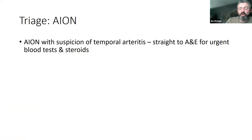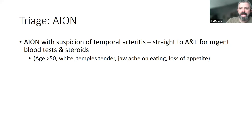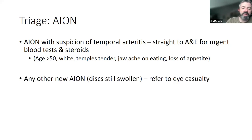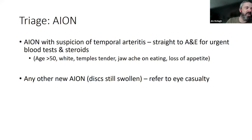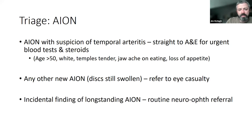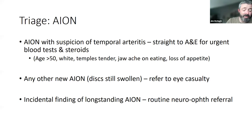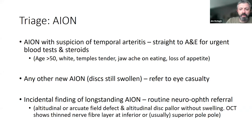For AION triage: if you think it could be GCA because they have relevant features and are the right age, they need to go to casualty immediately — no messing around with anything that could delay them. Any other acutely swollen disc with an altitudinal field defect consistent with AION also goes to casualty, as they'll need a workup including bloods to exclude severe anaemia or other causes. If you come across a long-standing altitudinal pallor with corresponding field defect that has clearly been there for a very long time, that's still worth referring, but via routine clinic.